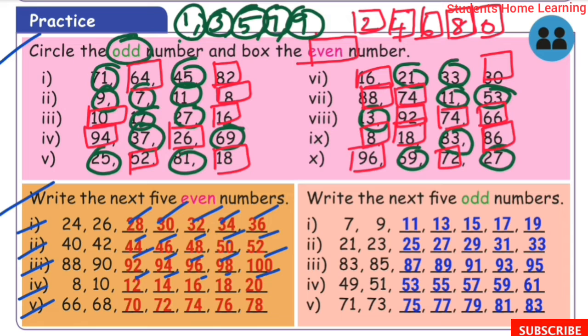Another even number set starting from 66, 68 — the even numbers are 70, 72, 74, 76, 78. Now write the next 5 odd numbers. First one: starting from 7, 9 — the next odd numbers are 11, 13, 15, 17, 19.